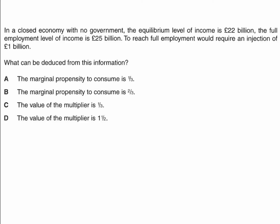We're told we have a closed economy with no government, and the equilibrium level of GDP is 22 billion, but the full employment level of GDP is 25 billion. Extra information we're given is that to reach full employment at 25 billion would require an injection of 1 billion. What can we deduce from that information?